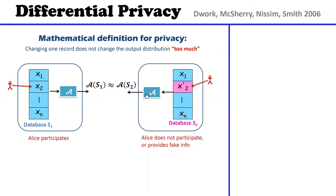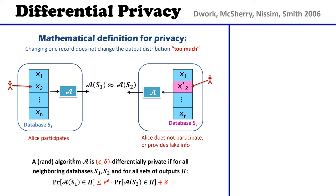We run the algorithm, and what we require is that the outcome distribution remains roughly the same whether we run it on the first or on the second database. Formally, an algorithm is differentially private if for every two neighboring databases S1 and S2, and for any possible event H, this event occurs with roughly the same probability on either database. This similarity between probabilities is quantified using parameters epsilon and delta.